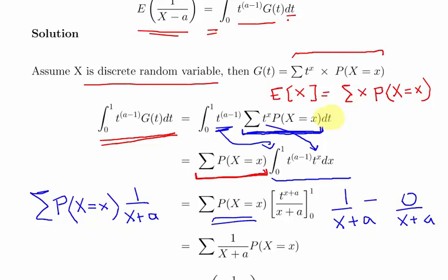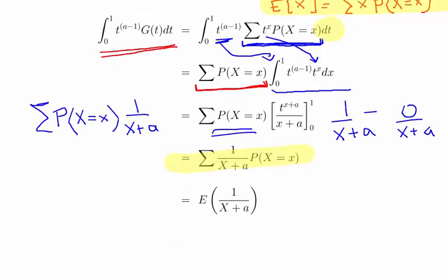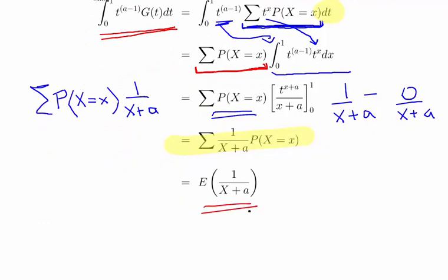Now if you recall, this is almost in a very similar form to what we have here. In fact that's exactly what it is. It's the expected value of 1 over x plus a. And that's really actually everything we're asked to do.